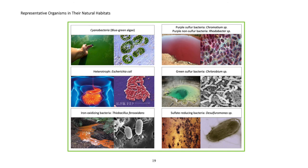Representative organisms in their natural habitats: Cyanobacteria or blue-green algae, heterotroph Escherichia coli, iron-oxidizing bacteria Thiobacillus ferrooxidans, purple-sulfur bacteria Chromatium sp., purple non-sulfur bacteria Rhodobacter sp., green-sulfur bacteria Chlorobium sp., sulfate-reducing bacteria Desulfuromonas sp.